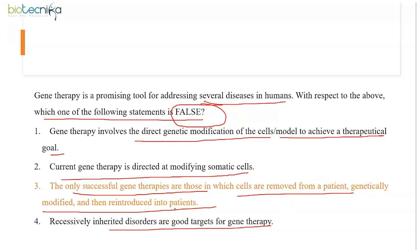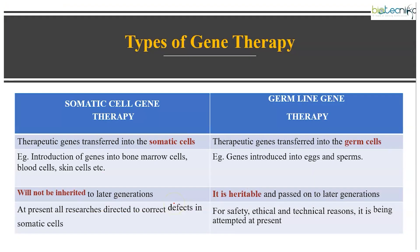The incorrect statement is C — the only successful gene therapies are those in which cells are removed from a patient, genetically modified, and reintroduced into the patient. Gene therapy is about replacing a damaged gene with a healthy one, basically used for curing diseases. Based on the type of cells, we have two types: somatic cell gene therapy and germline gene therapy. In somatic cell gene therapy, therapeutic genes are transferred into somatic cells; in germline gene therapy, therapeutic genes are transferred to germ cells.